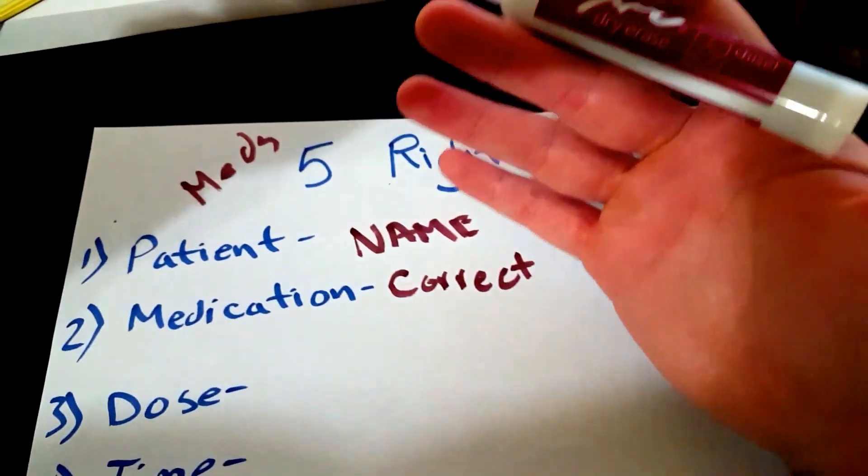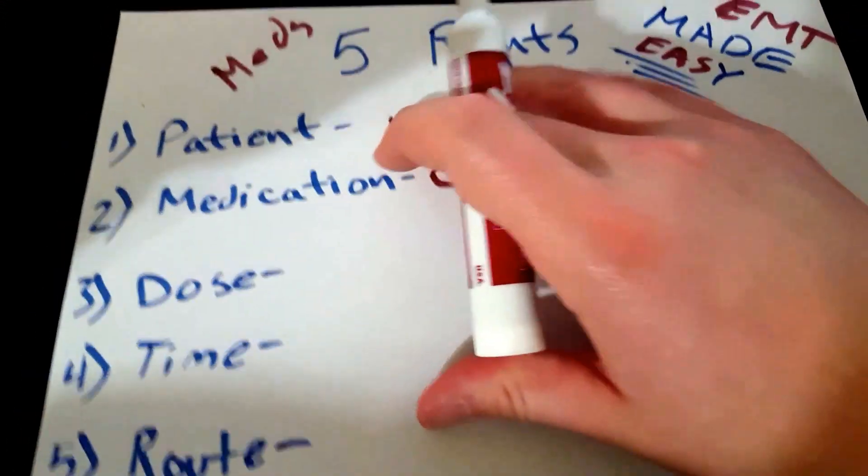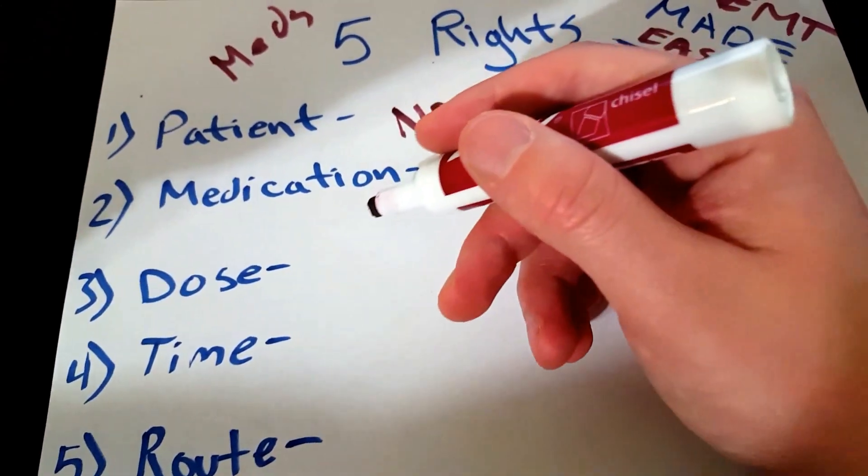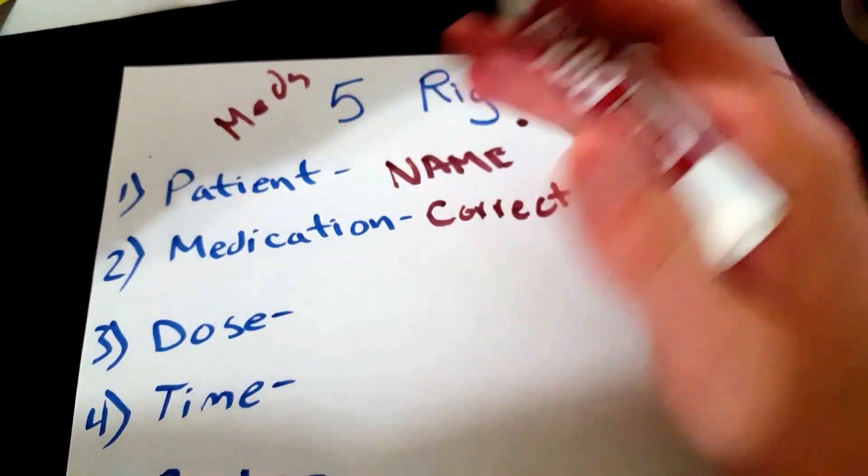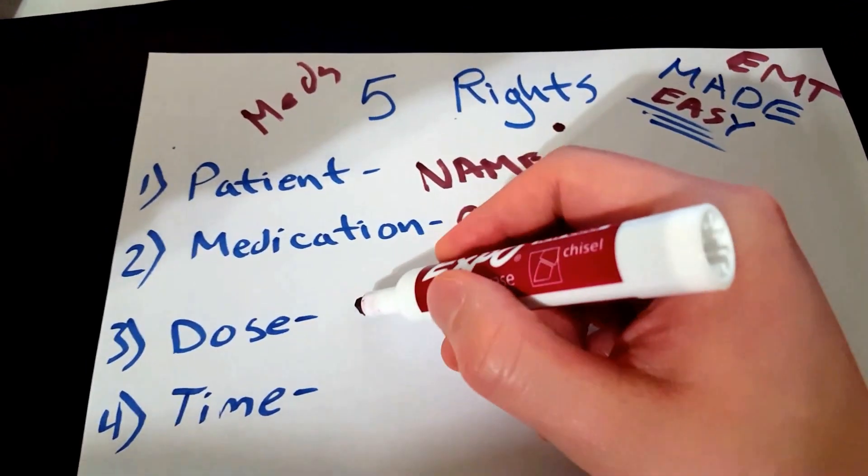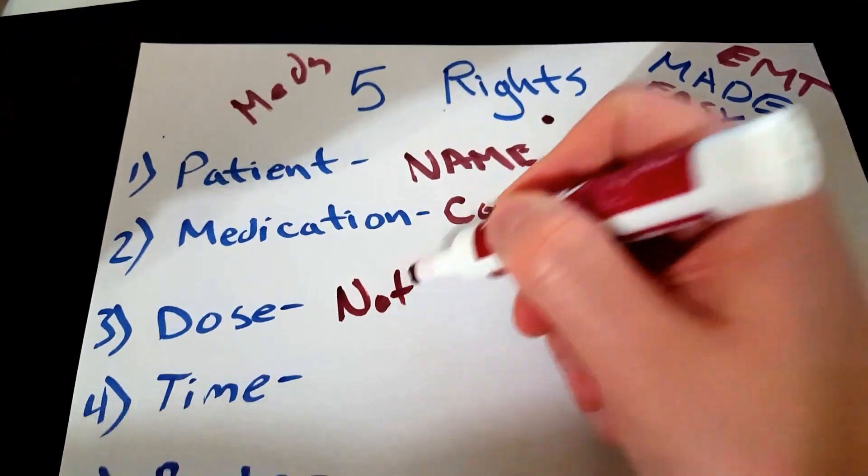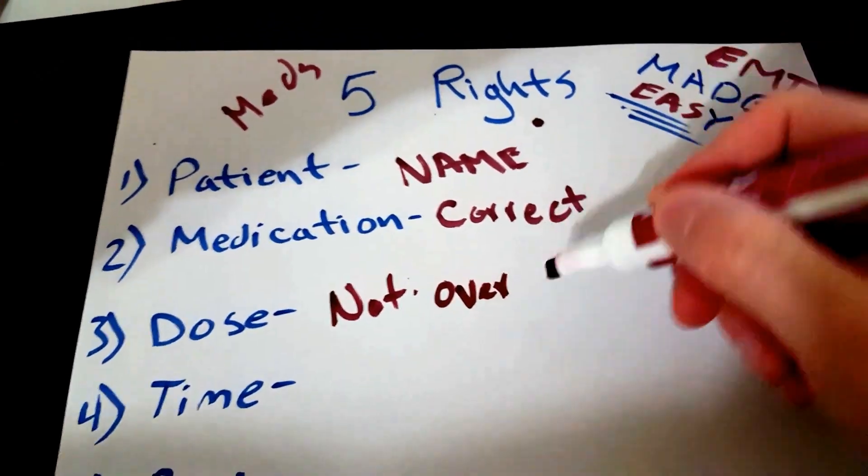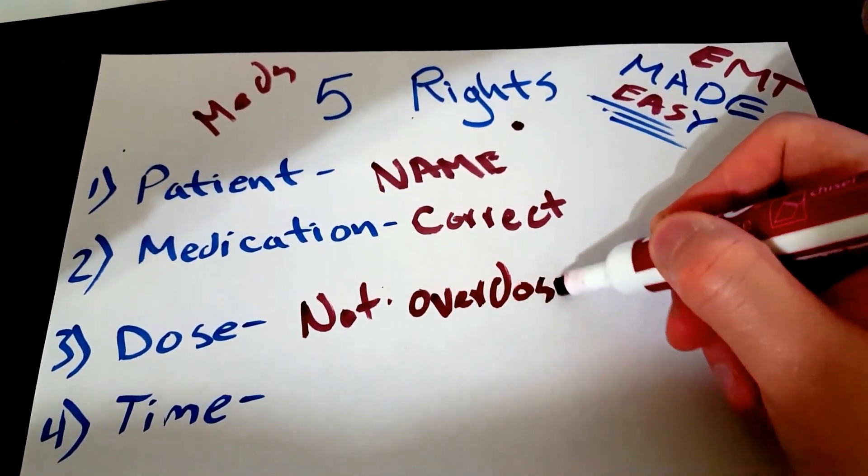Next, the dosage. You want to make sure you're giving the right dose. You don't want to give too many pills, you don't want to give too many sprays, you don't want to give too many of anything. So dosage, not overdosing. There you go, that's why this matters right here.